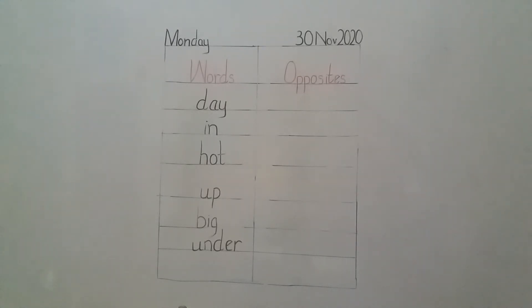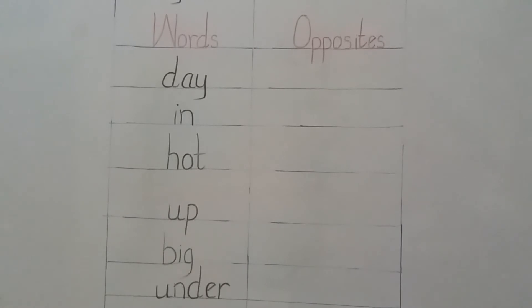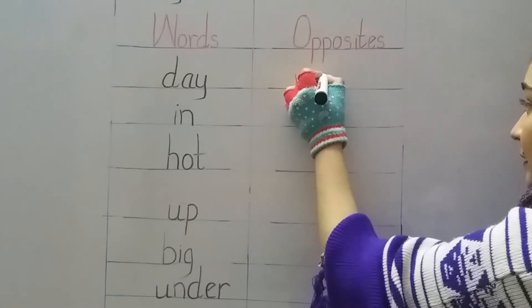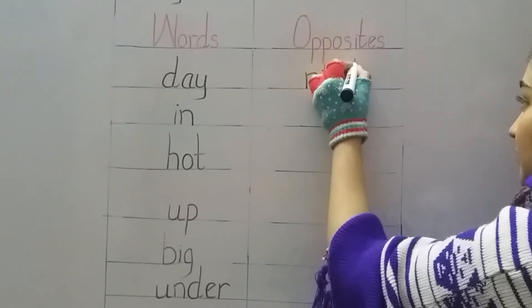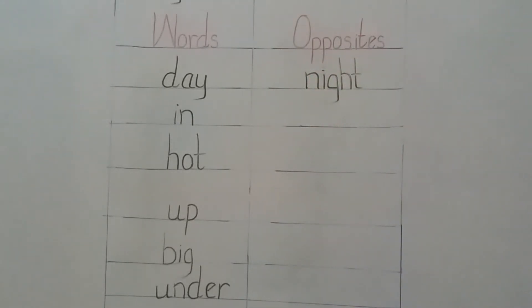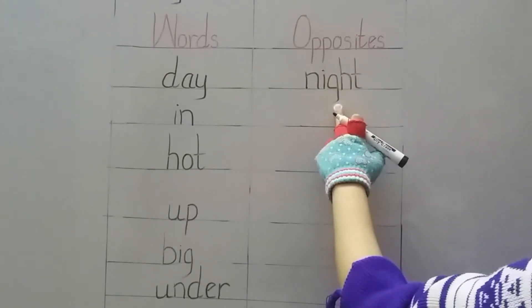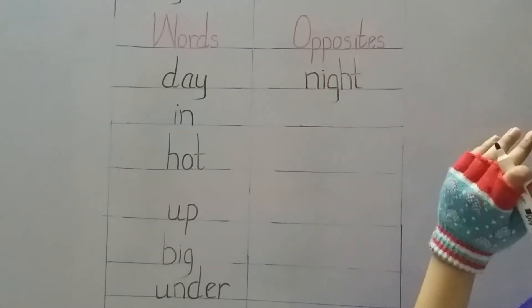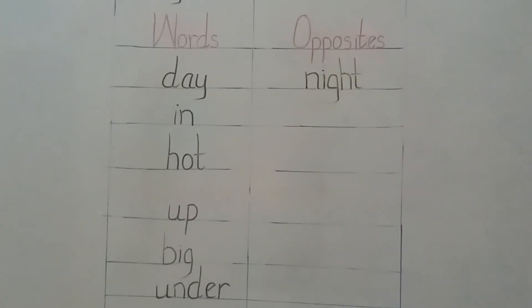Now let's write the opposites. What is the opposite of Day? Day — Night. N-I-G-H-T, Night. G and H are silent here — meaning they have no sound. Night. It has a slight sound of H but no sound of G. N-I-G-H-T, Night.